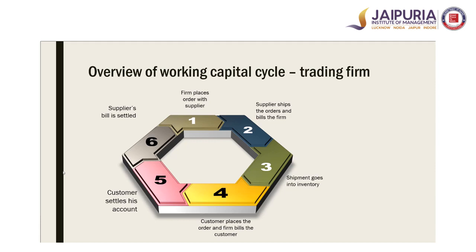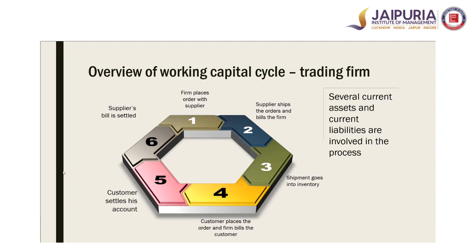Based on these routine business operations of a trading firm, several current assets and current liabilities come into picture. The moment the supplier bills the firm, accounts payable comes into picture. The moment shipment is received by the firm, inventories come into picture. And the moment sales are done and customers are billed, accounts receivables come into picture. These — debtors, inventory, and creditors — are the most common items of working capital, and you can see how they are linked with routine business operations.